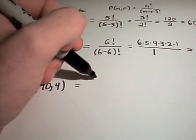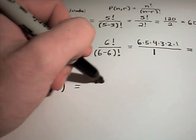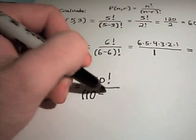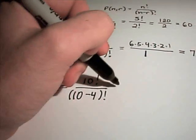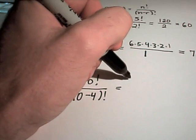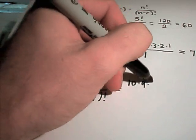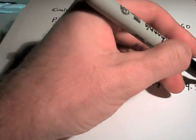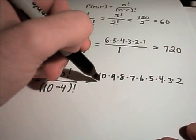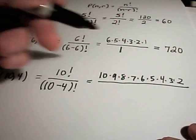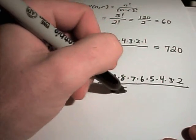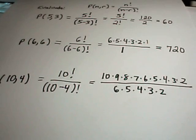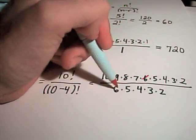And our last one, we would have 10 factorial, again we have to subtract them, 10 minus 4 factorial. This is 10 times 9 times 8 times 7 times 6 times 5 times 4 times 3 times 2 on top. On the bottom, 10 minus 4 is 6 factorial, so I have 6 times 5 times 4 times 3 times 2.